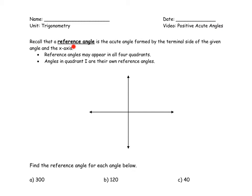A reference angle is an angle that is formed by the terminal side of the angle and the x-axis. Reference angles may appear in all four quadrants, and angles in quadrant one are their own reference angles. To find a reference angle in quadrant two we do 180 minus theta; quadrant three is theta minus 180; and quadrant four is 360 minus theta.